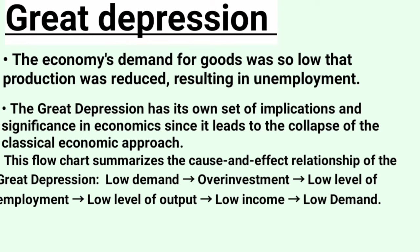This worst condition created the concept of unemployment under the classical approach. This flow chart summarizes the cause-and-effect relationship of the Great Depression: low demand, over-investment, low level of employment, low level of output, low income, and back to low demand — that is the Great Depression cycle. Low demand exists because there is more investment but low level of employment, leading to low output and low income.